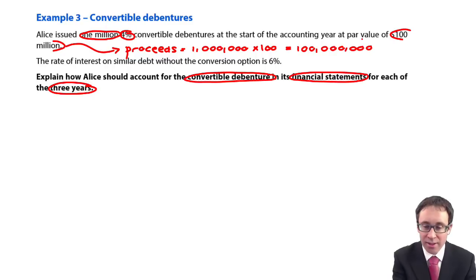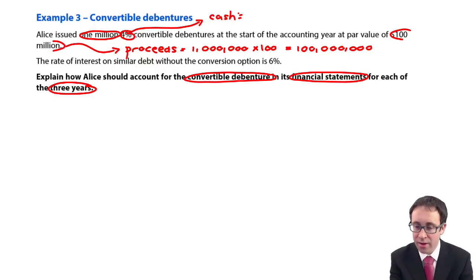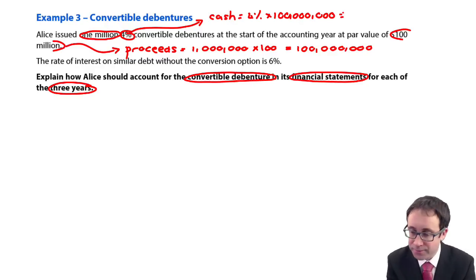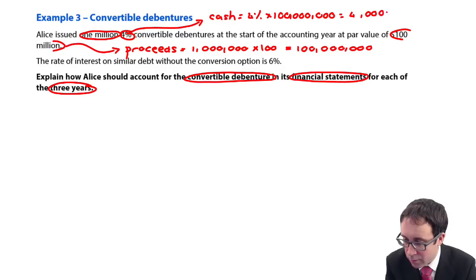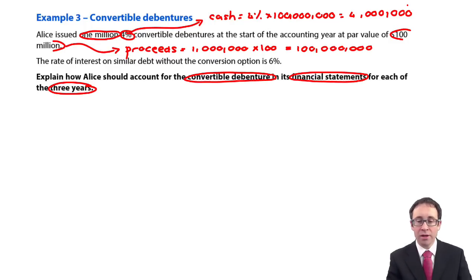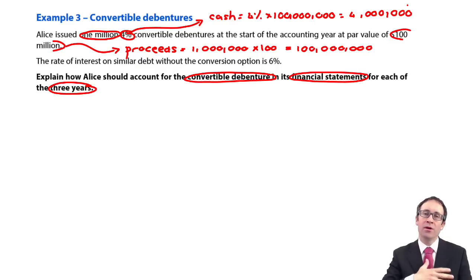The 4% coupon means the cash you are committed to pay is 4% of the 100 million par value — that's 4 million dollars every year for each of the next three years. So we debit the bank with 100 million initially. We then need to work out the value of the financial liability, so that we can determine the value of the equity, and then treat the financial liability at amortised cost.